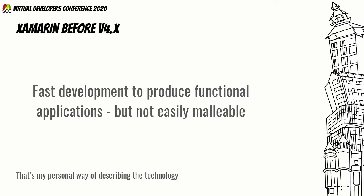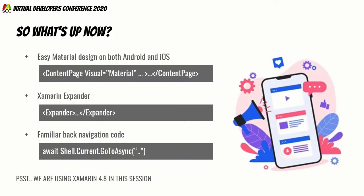The good thing about Xamarin since the start is they've always been consistent and regular with updates. That means if mobile development patterns take a different turn, Xamarin is able to adapt — and they have. Today's session covers a few new things added in version 4.6 and up to see what Xamarin looks like right now, starting with Material Design.